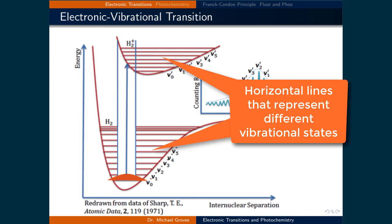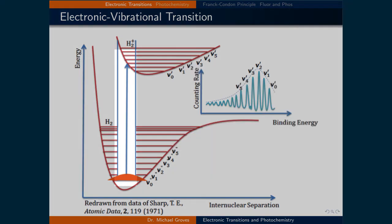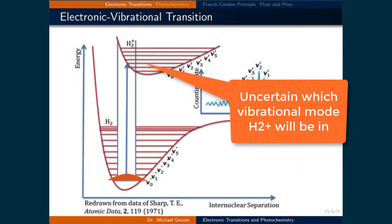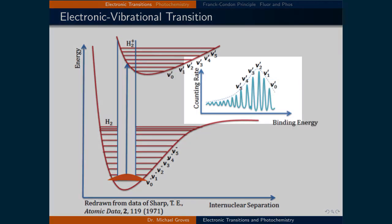Within each potential, there are a series of horizontal lines, which represents the different vibrational states of the molecule. The vertical arrow represents the ionization of H2, where the molecule transitions from the ground state, both electronically and vibrationally, into an excited state. The electronic state is set by the electronic configuration. However, the vibrational state each H2 plus lands in is not certain.